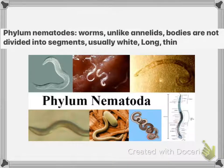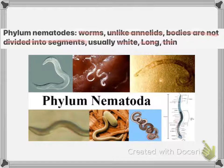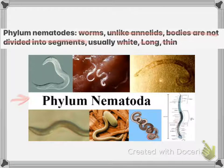Phylum Nematoda are worms that, unlike annelids, do not have bodies divided into segments. Instead they are long and thin. Remember each phylum group by its example, which will help you recall its features.